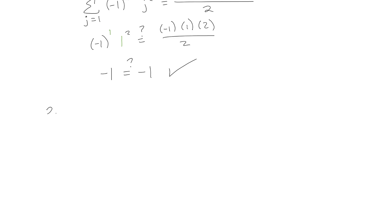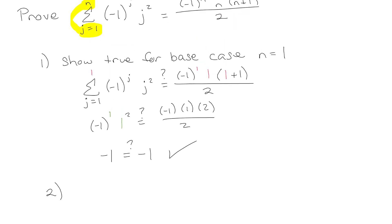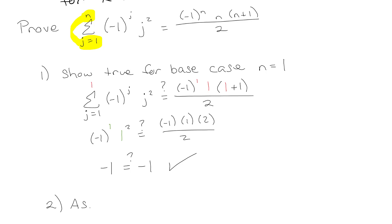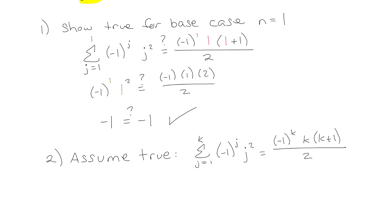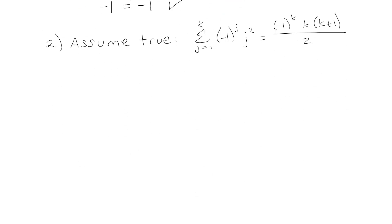Now we're going to assume it's true for some unknown value of k. We assume that if j goes from 1 to k, the summation formula holds — all the n's become k's while the j's inside the summation stay as j's. We do know it's true for at least one value: k equals 1. So we assume this is true, with every n replaced by k.